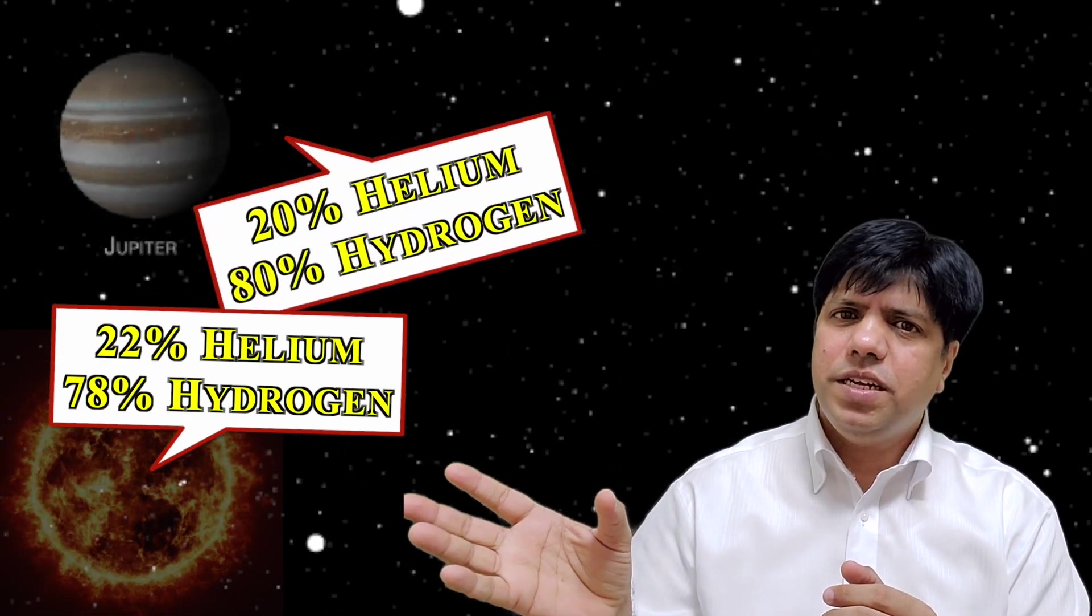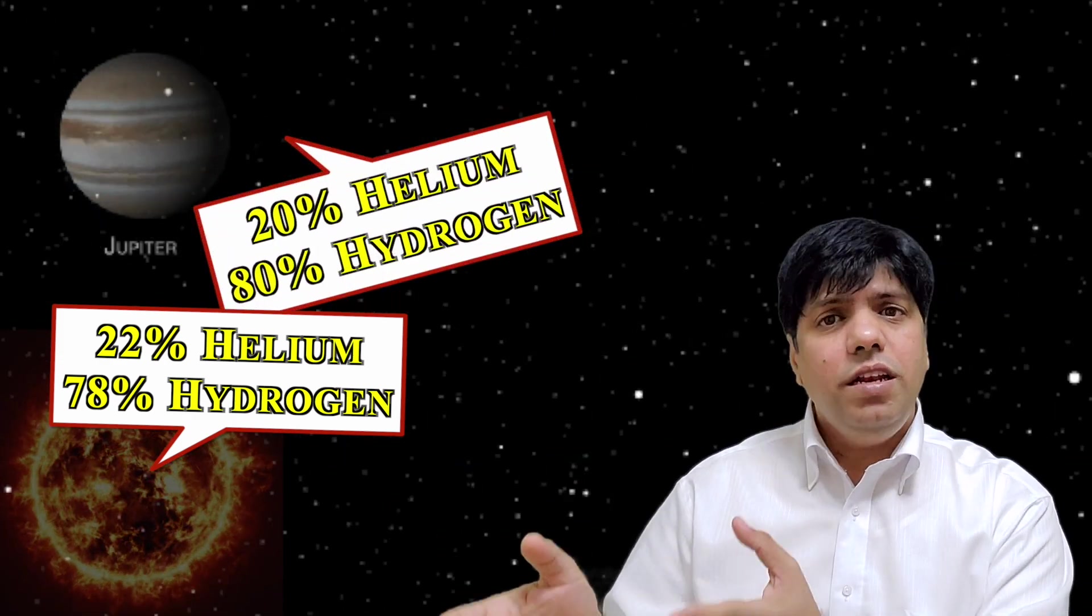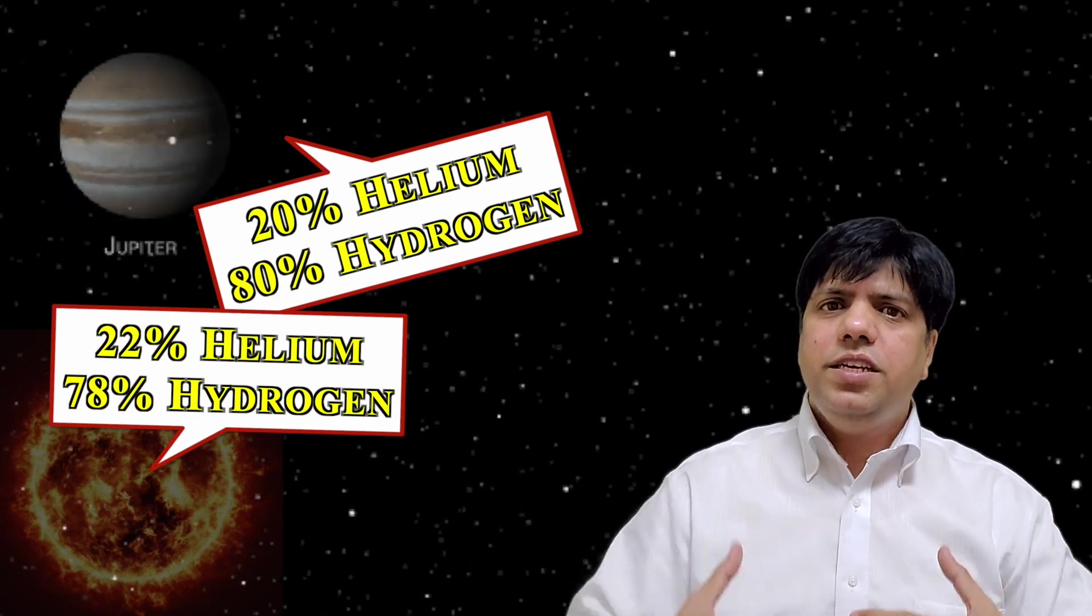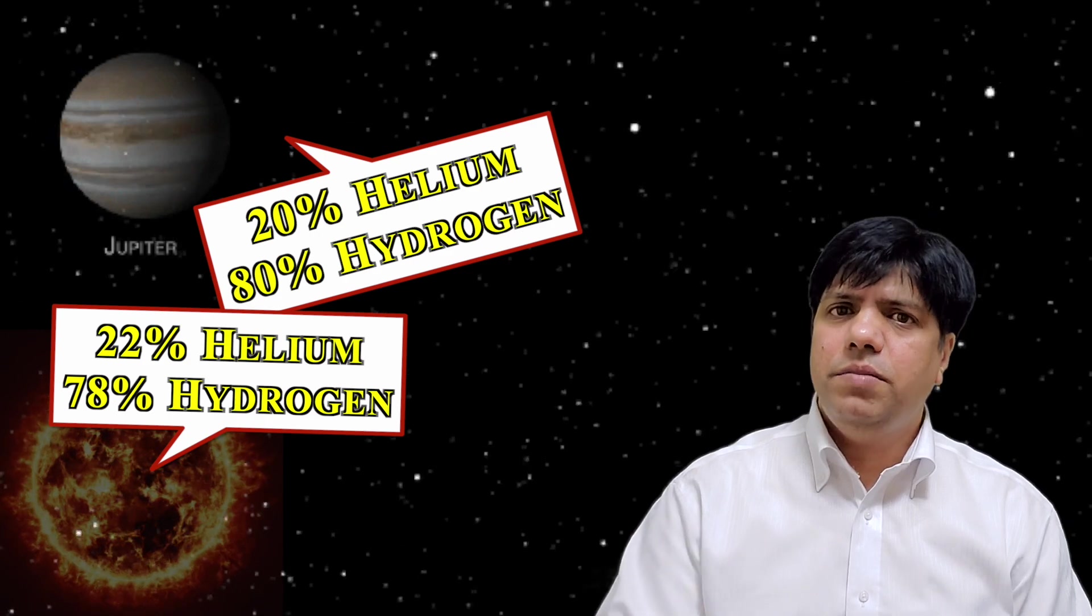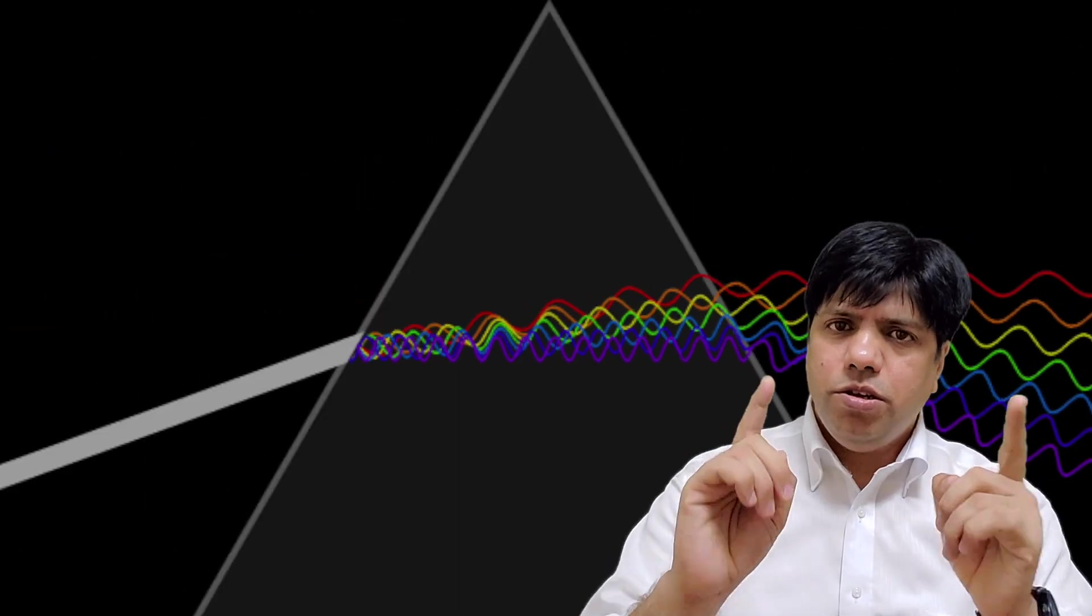It has about 80 percent hydrogen and 20 percent helium. But anyway how do we know sitting here how do we know that these heavenly bodies have this chemical composition? And for that we'll have to understand spectroscopy.